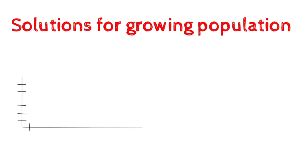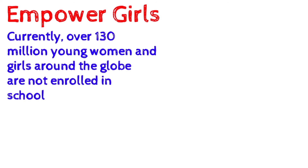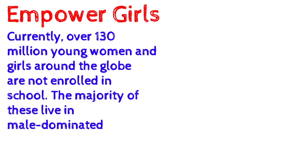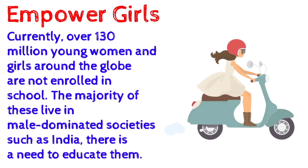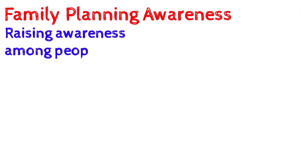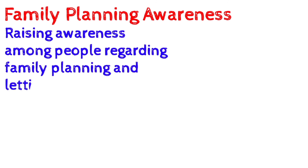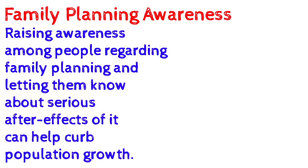Next we are going to talk about solutions for the growing population. The first solution is to empower girls. Currently over 130 million young women and girls around the globe are not enrolled in school, the majority of these living in male-dominated societies such as India. The second solution is raising awareness among people regarding family planning and letting them know about the serious after-effects, which can help to curb population growth.